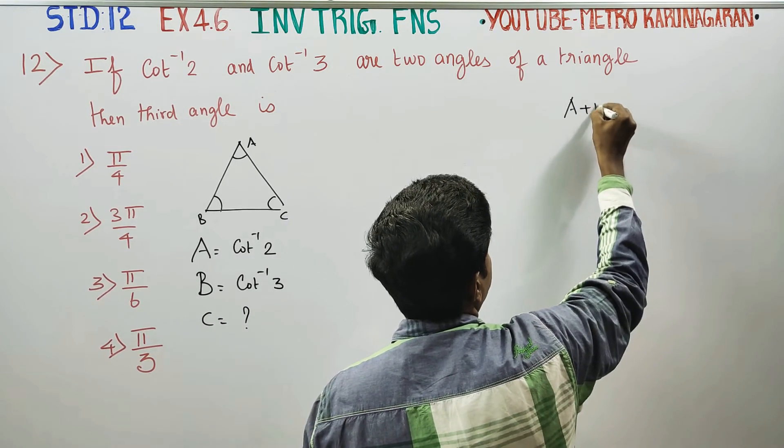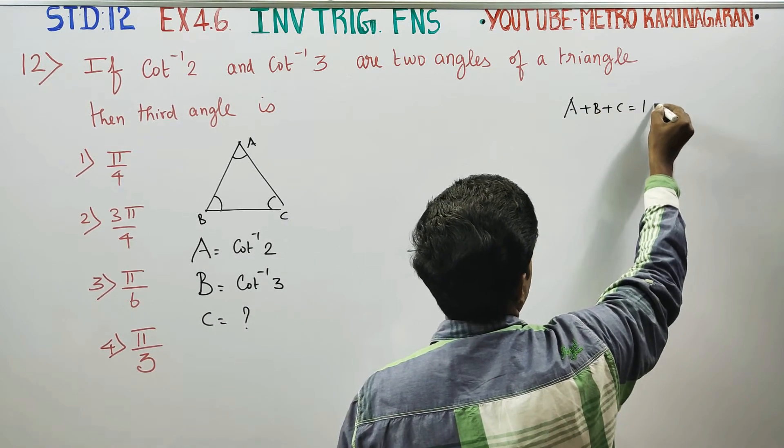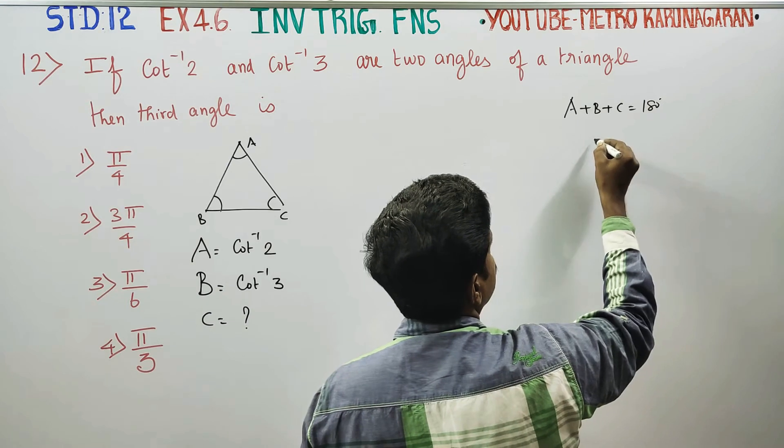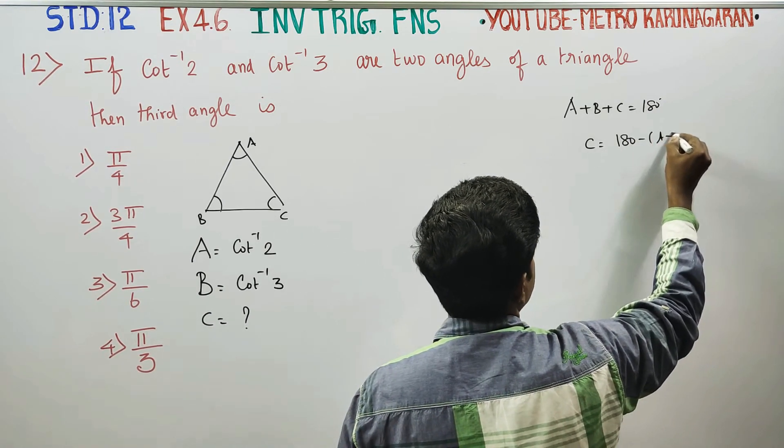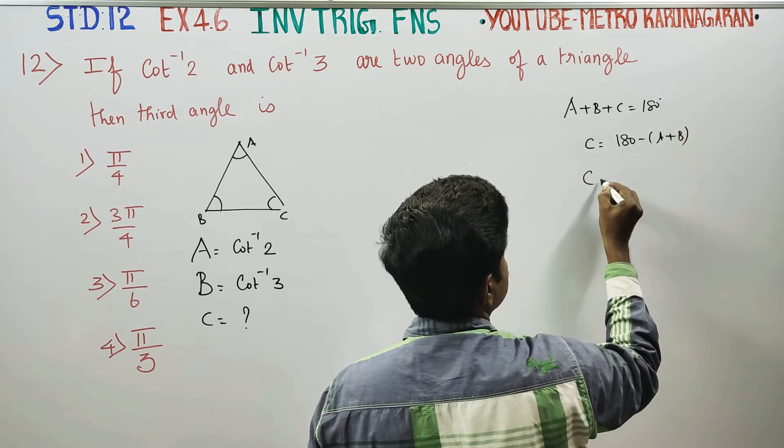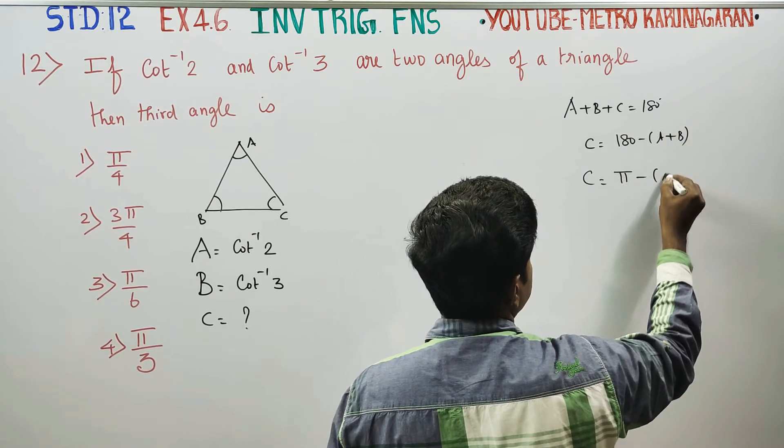We know that A plus B plus C is equal to 180 degree. Therefore, C is equal to 180 minus A plus B. That is, C is equal to pi minus A plus B.